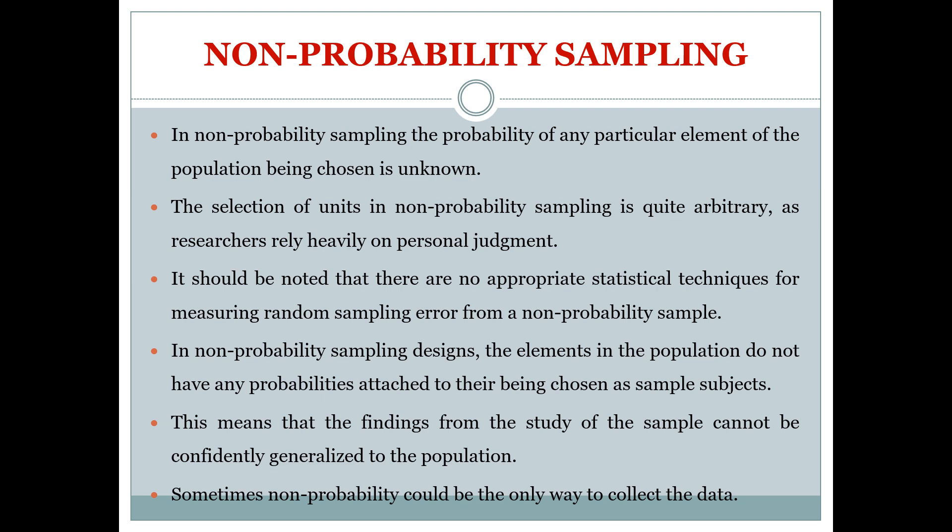In non-probability sampling designs, the elements in the population do not have any probabilities attached to their being chosen as sample subjects. This means that findings from the study of a sample cannot be confidently generalized to the population. Sometimes non-probability sampling could be the only way to collect data.